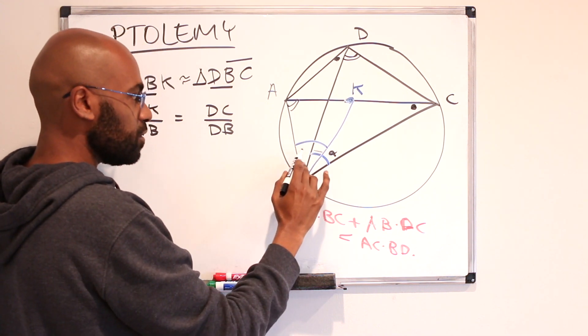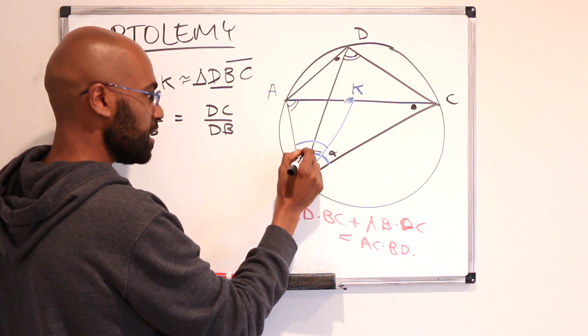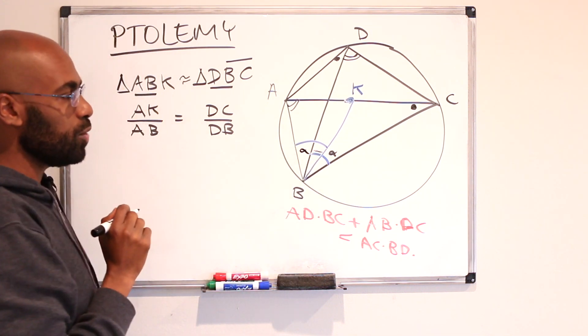But this angle here is also the blue angle minus this angle over here. So this angle right over here is alpha as well.